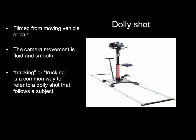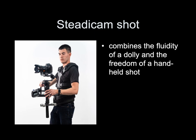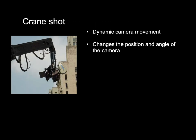Dolly shot: filmed from a moving vehicle or cart, the camera movement is fluid and smooth. Tracking or trucking is a common way to refer to a dolly shot that follows a subject. Steadicam shot: a harness is worn and the camera is attached to the body with a monopod — it combines the fluidity of a dolly with the freedom of a handheld shot. Crane shot: named for the piece of equipment the camera is placed on, it is a very dynamic camera movement that changes the position and angle of the camera.